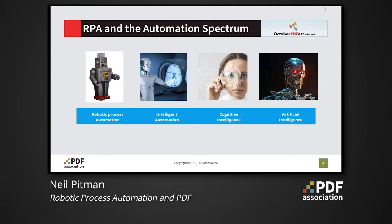It's helpful to think of a spectrum of automation to enable us to distinguish between simple RPA automation and other much more complex methods. We will explain and differentiate between robotic process automation, intelligent automation, cognitive intelligence, and artificial intelligence.